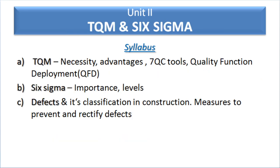Unit number two is titled TQM and Six Sigma. The syllabus covers TQM, its necessity, and the different seven quality control tools. Next is Six Sigma, its levels and its importance. The last part covers defects and their classification in the construction.